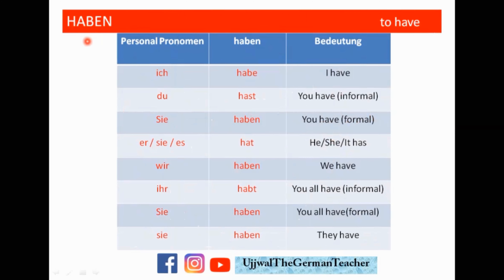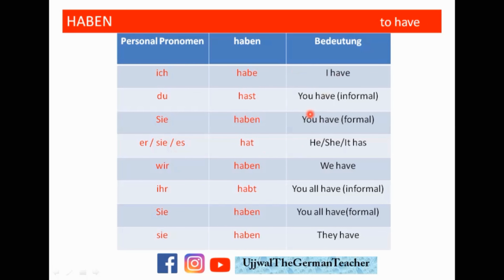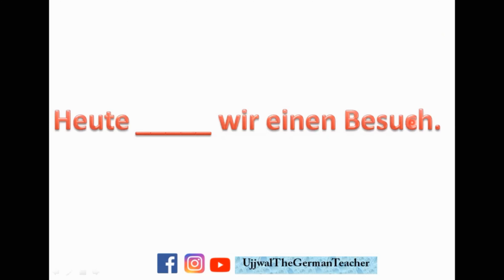Let's see the next verb — Haben. Haben means to have. Same columns here. Ich habe, du hast, Sie haben. Er, sie, es — hat. Wir haben. Ihr habt. Sie haben. In English you have 'has' and 'have' — I have, you have, he has, she has, it has; the others are 'have'. You find that distinction here in Haben. Use it according to the case.